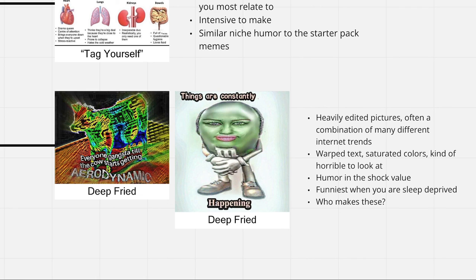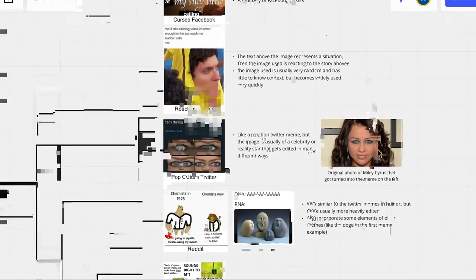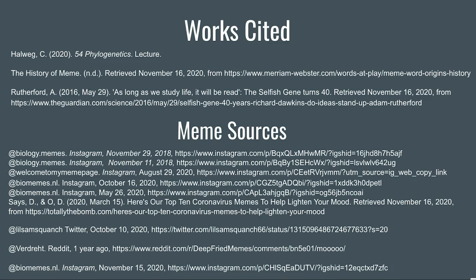Finally, there's the Deep Fried memes, our outgroup OTU. They are heavily saturated pictures with vaguely random phrases. They rely on the humor of shock value and are funniest when you're sleep deprived. And that is my phylogenetic meme tree. Hope you enjoyed. Thank you for watching. Here are my works cited. The meme tree is in the description if you'd like to see it.